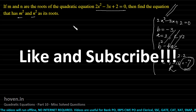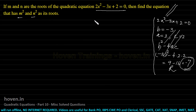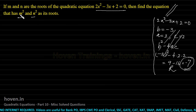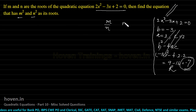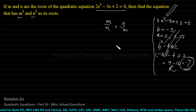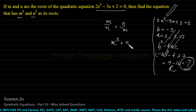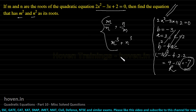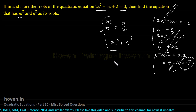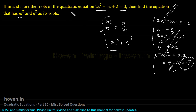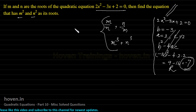Therefore, some other technique is required. The general technique for solving such types of questions — where he says find the equation with m² and n² — also applies when he says m/n and n/m, or m³ + n³ as roots. These complicated variations can always appear, so you need a general strategy ready. I will now erase the board and solve this with all the steps.